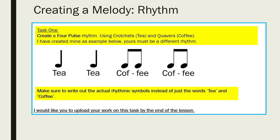Tea, tea, coffee, coffee: one, two, three, four. We can clap that rhythm out. Please make sure to write out the actual rhythmic symbols as well — so instead of just writing the words 'tea' and 'coffee,' I'm looking for the dots with the lines and how they're all connected. So here I've got tea, tea, coffee, coffee — that's my rhythm. It's an interesting rhythm, but it's not very interesting if we're going to use one pitch for it. So we want to think about how to make it more interesting by adding pitch, and this is where the stave comes into use.